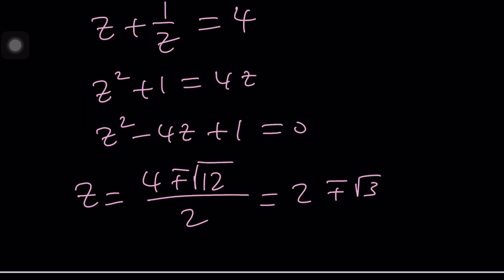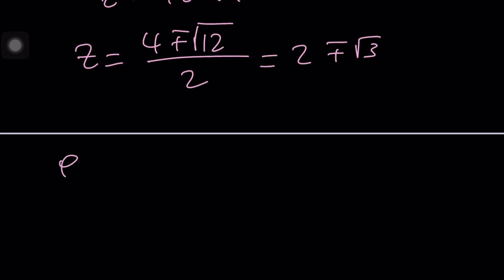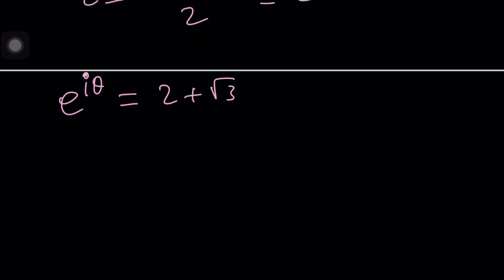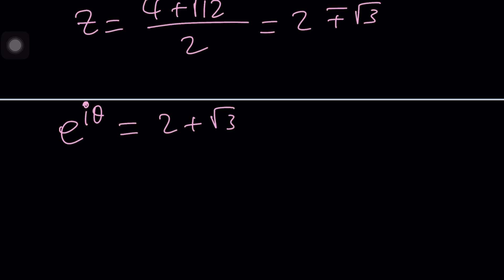So E to the i theta. Let's set it equal to 2 plus root 3 first. It doesn't matter. The rest is easy. They're very similar. So at this point, you probably want to do the following. Turn this into a complex number. Why don't we multiply by E to the power of 2 pi n i, which is one in the complex world. So that's how you can complexify things.